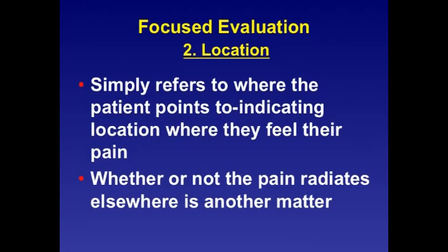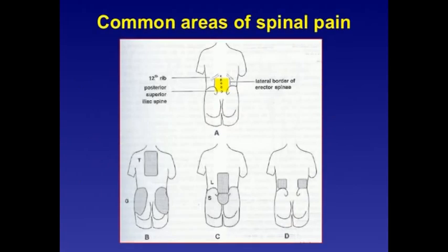We ask patients where they feel the pain, and the patient will simply point to the area of most significant pain. The next step is identifying whether the pain has any radiation patterns. A common area of spinal pain — the most common is the lumbar region, gluteal region, sacral region, and the thoracic spine, especially the area between the scapular blades.